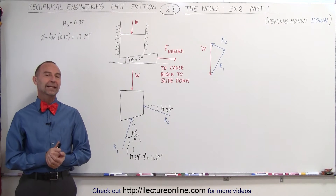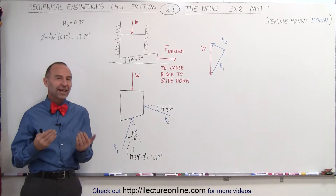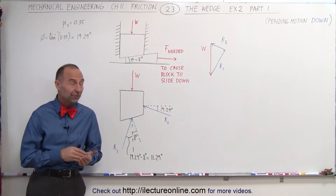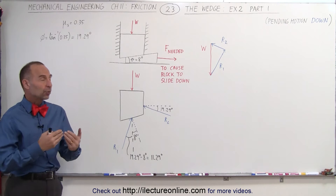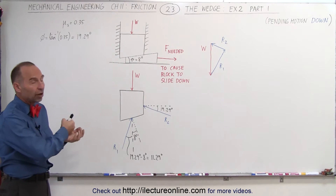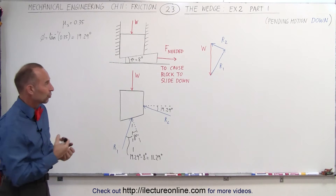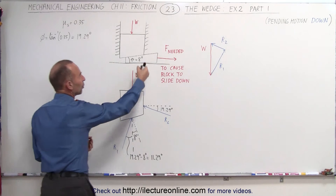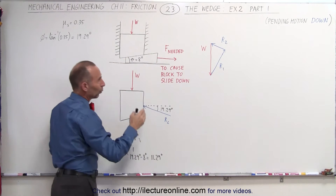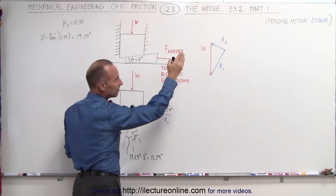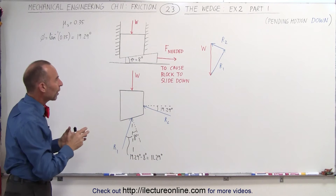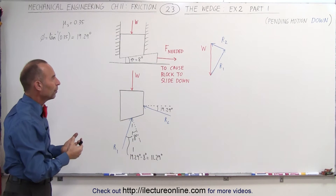Welcome to Electron Line. Here we have the same setup as in the previous two videos, except now we're trying to find the force needed to cause the block to slide down. What we're trying to do is remove the wedge and have the block slide down. What is the pending motion downward force required to do so?